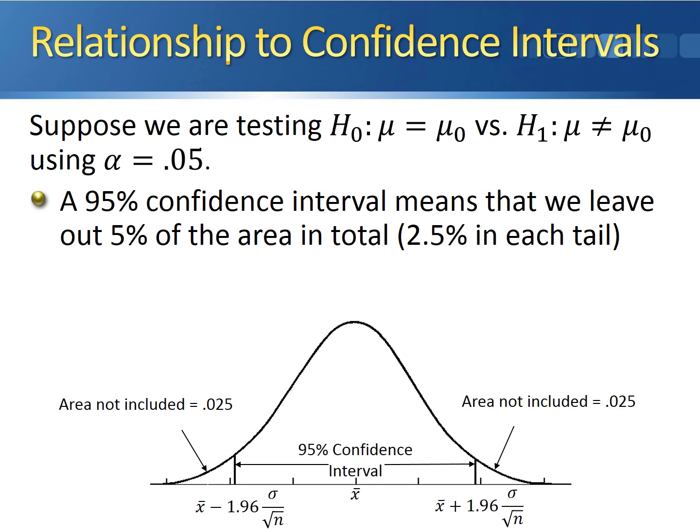A 95% confidence interval means that we're leaving out 5% of the area in total. Since we're leaving out 5% of the area for a confidence interval, we're leaving out 2.5% of the area in each tail under the normal distribution.